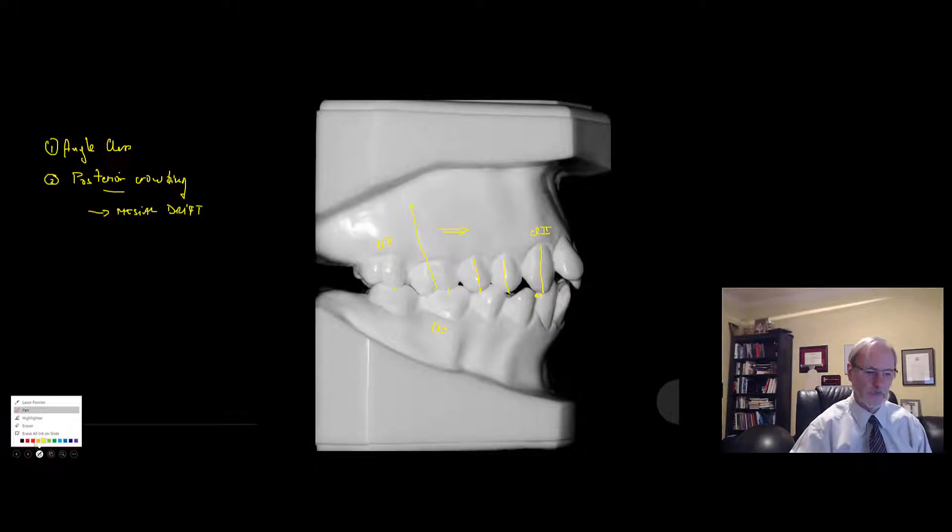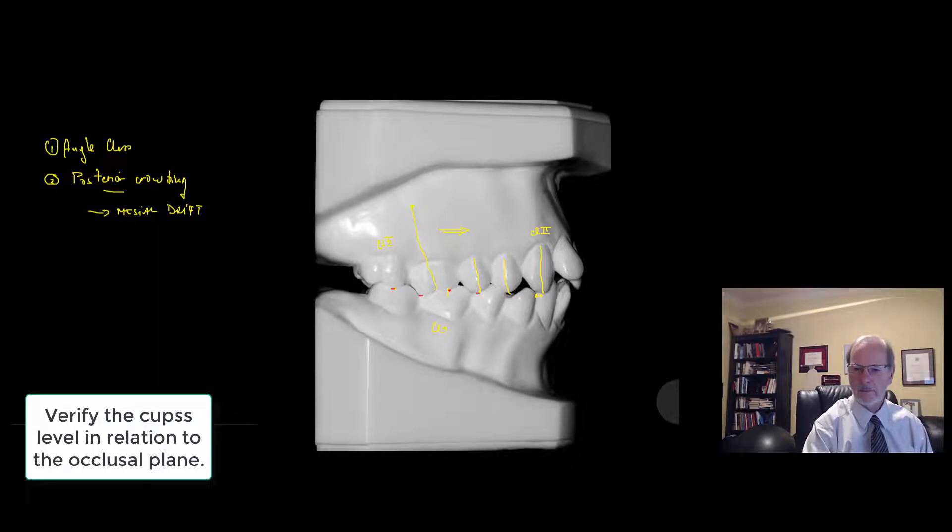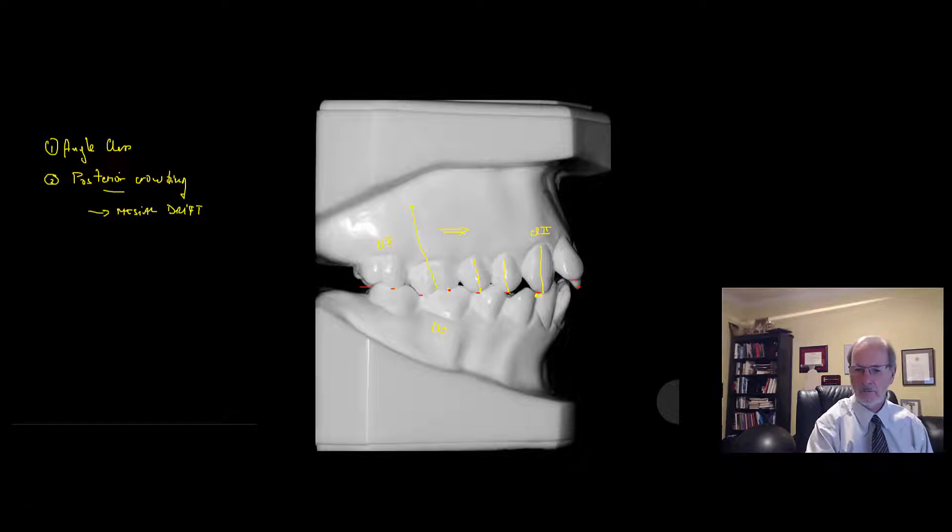To continue on the left side, you can get an idea and they're not always the same. That's why it's important to verify the cusp position in relation to the occlusal plane. That will give you an idea with a line of best fit which teeth have to move up and down. This would be the occlusal plane, and it could be a little bit higher in a case like this one.